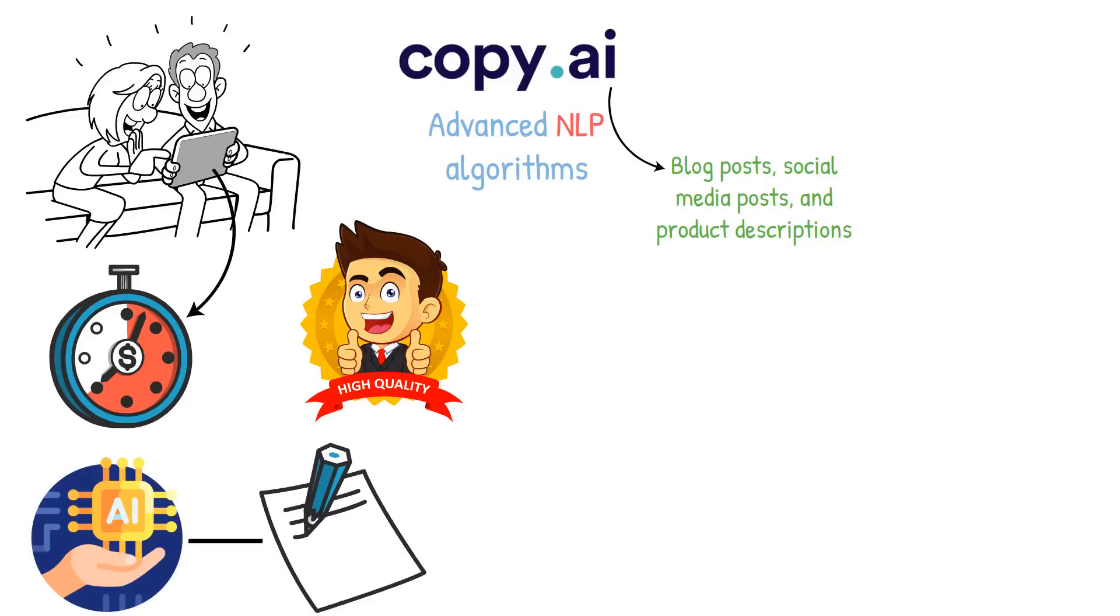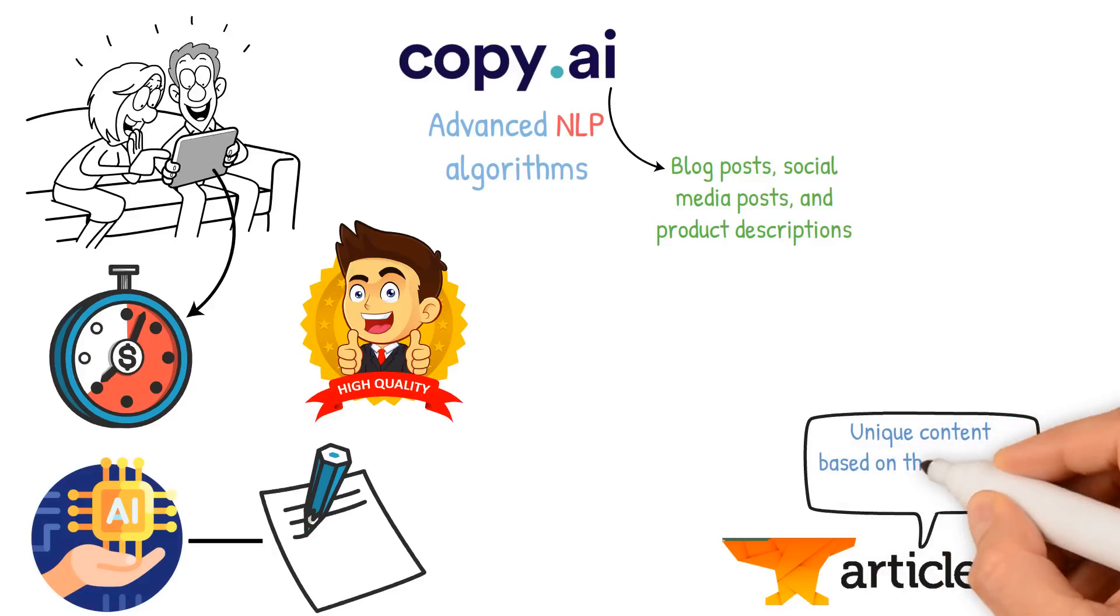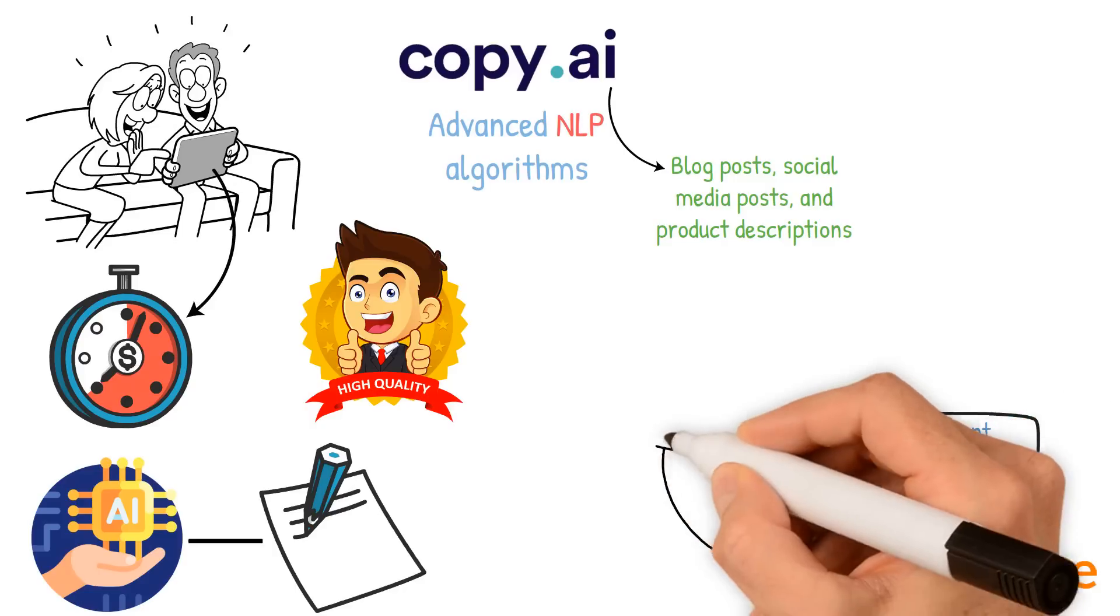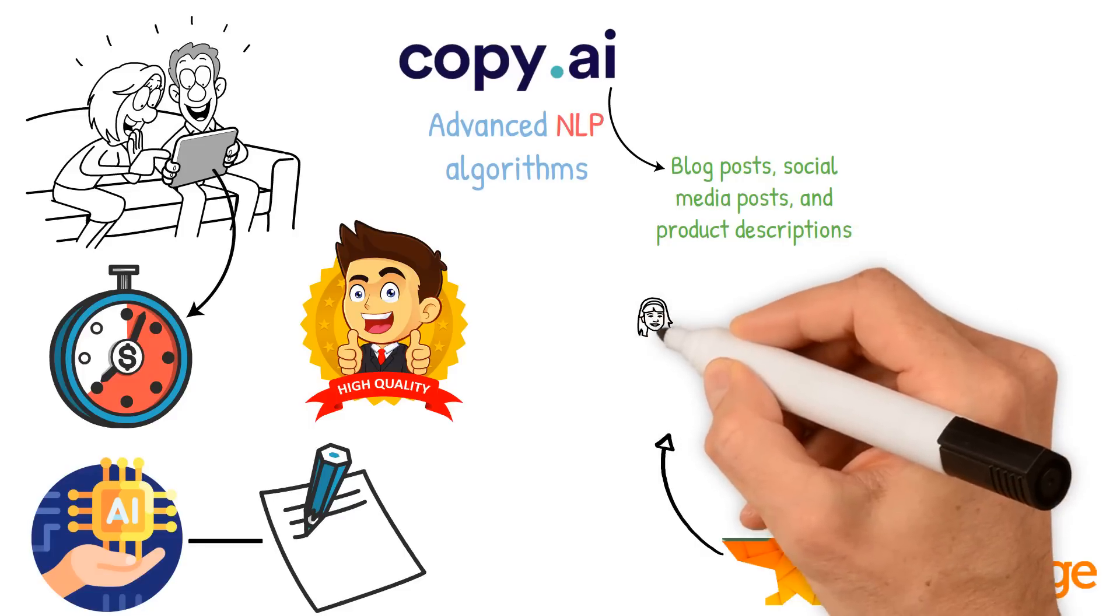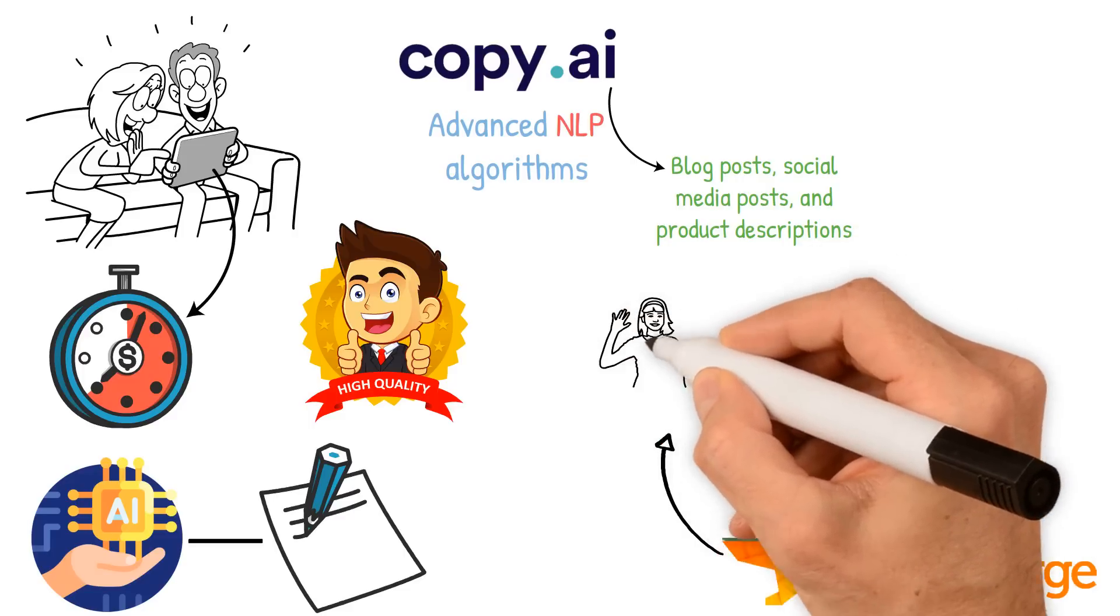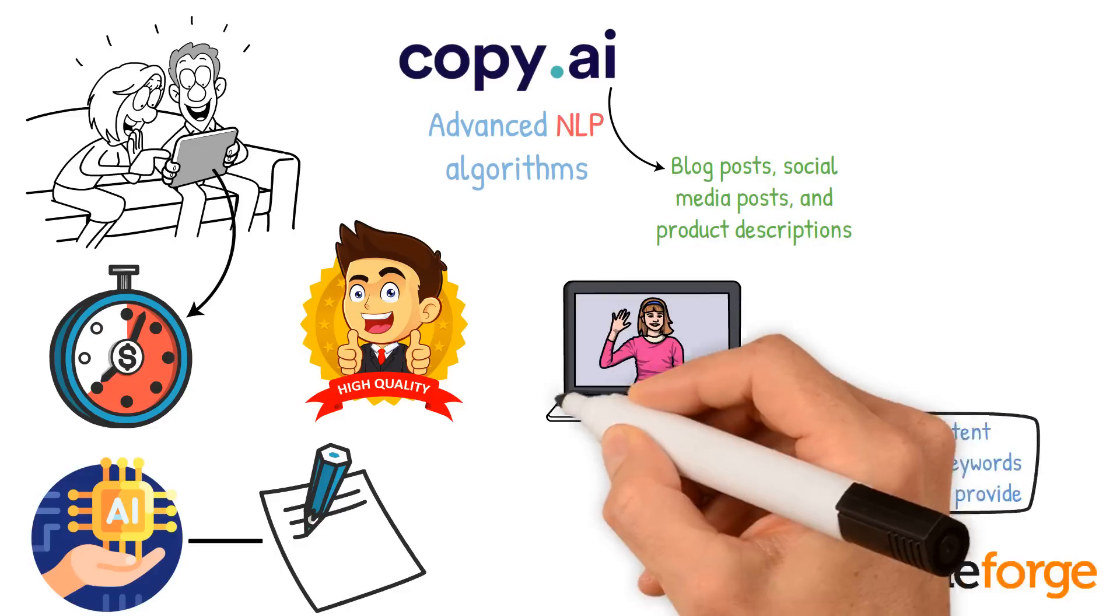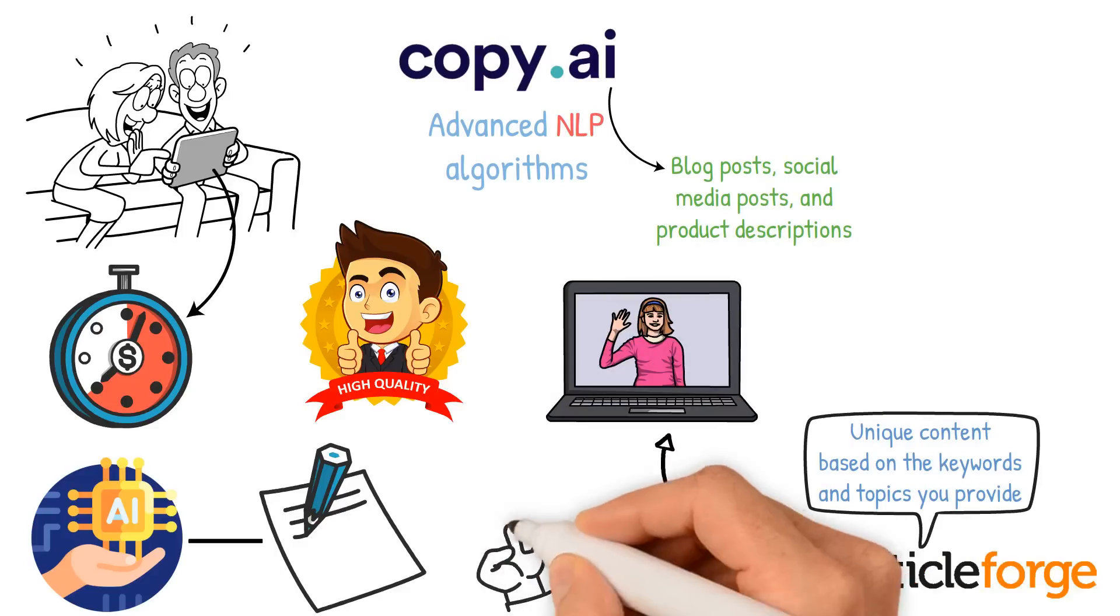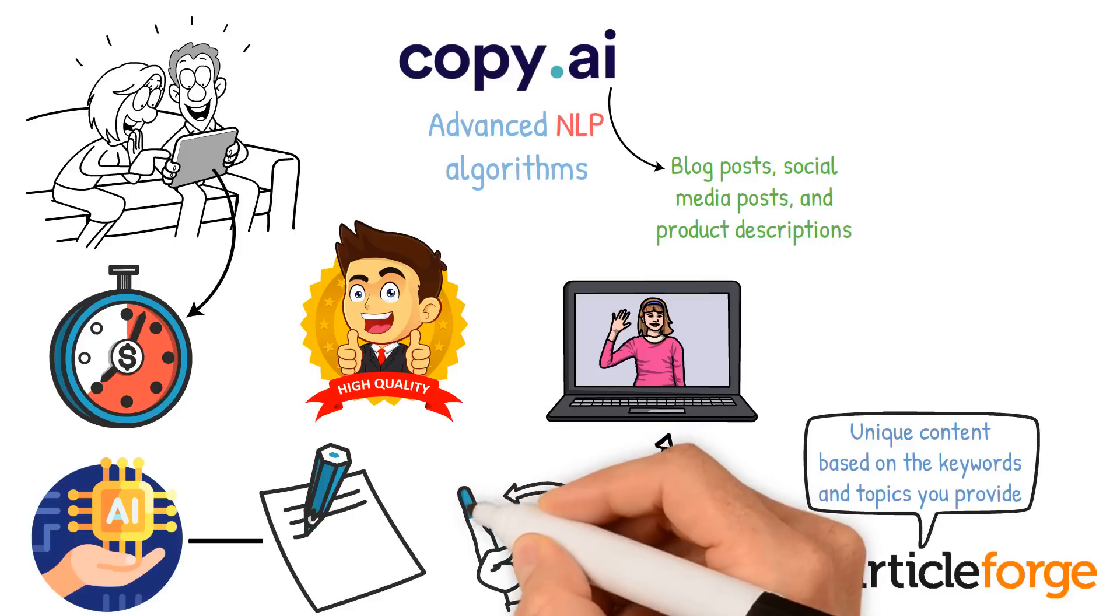Another example of an AI-powered content creation tool is ArticleForge. The tool uses AI algorithms to generate unique content based on the keywords and topics you provide. It can produce content in various formats including articles, blog posts, and product descriptions. The generated content is optimized for search engines and is unique, ensuring that your website won't be penalized for duplicate content.